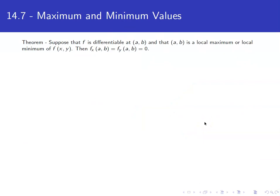We can find where these maxes and mins occur, much like in Calculus 1, except we now have to worry about two variables. If a function is differentiable and has a max or a min at a particular point, then both partial derivatives with respect to x and y must be zero at that point.